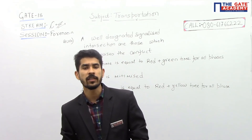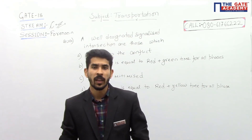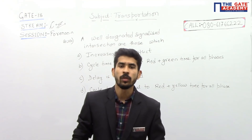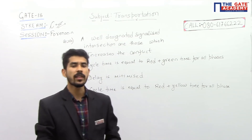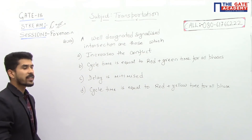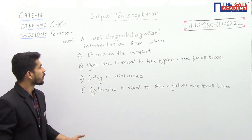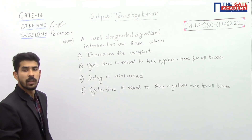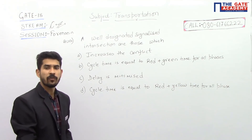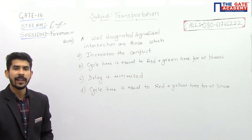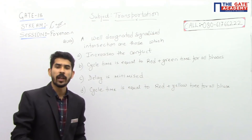Hello friends, let us discuss a question asked in late 2018 in Civil Engineering in the forenoon session. This particular question is from transportation engineering and the question says: 'Well-designated signalized intersections are those which?' The options are: first, increases the conflict; second, cycle time is equal to red plus green time for all phases; third, delay is minimized; and fourth, cycle time is equal to red plus yellow time for all phases.